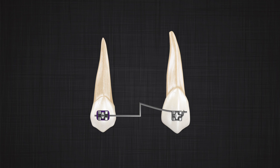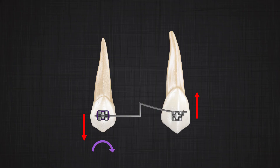Yes, it would be similar to any V-bend. You have a one-couple system that, if you bring the wire down to the canine, will cause intrusion on the canine, extrusion on the premolar, and a clockwise moment on the premolar. For the system to be in balance, there should be another moment in the opposite direction with equal magnitude. If you look at the red arrows — the intrusion and extrusion forces in the system — they by themselves produce another couple, and the result of this couple is the moment that is equal and opposite in direction compared with the purple arrow.